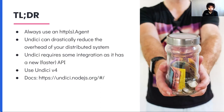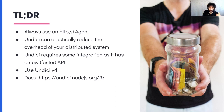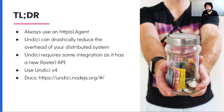I am almost wrapping up. I just want to recommend: always use an HTTP agent, check out undici v4, and if you have the problem of doing a lot of microservice HTTP calls, undici can actually drastically reduce the overhead for your distributed system. We have a new docs website at https://undici.nodejs.org. Undici is part of the Node.js project now.